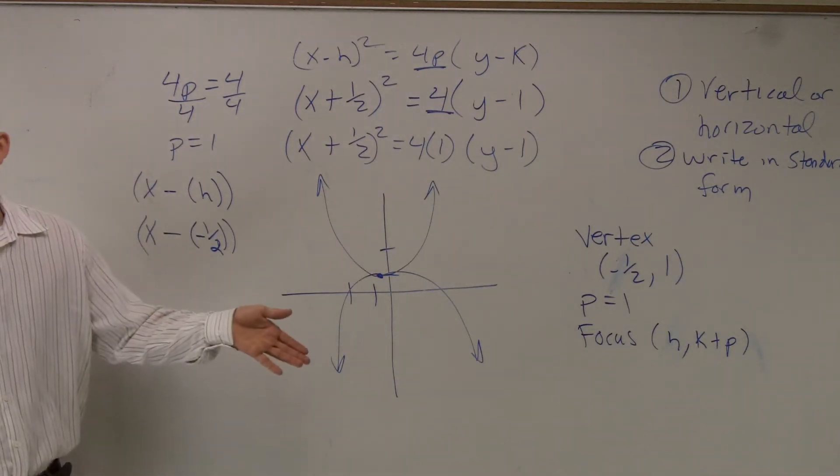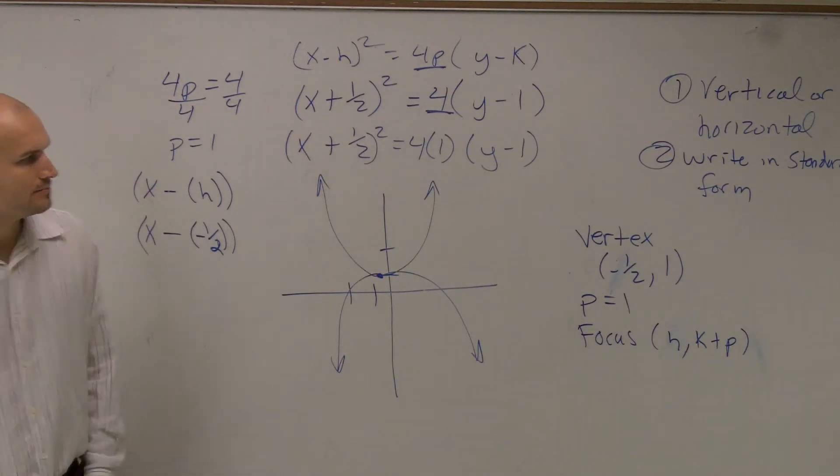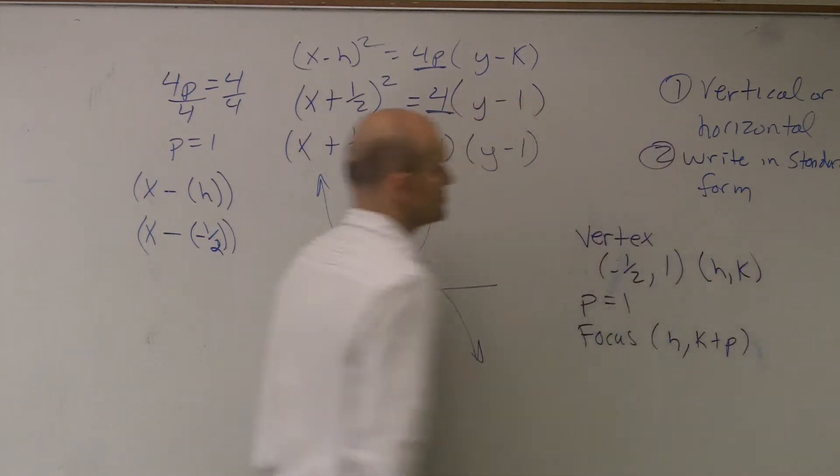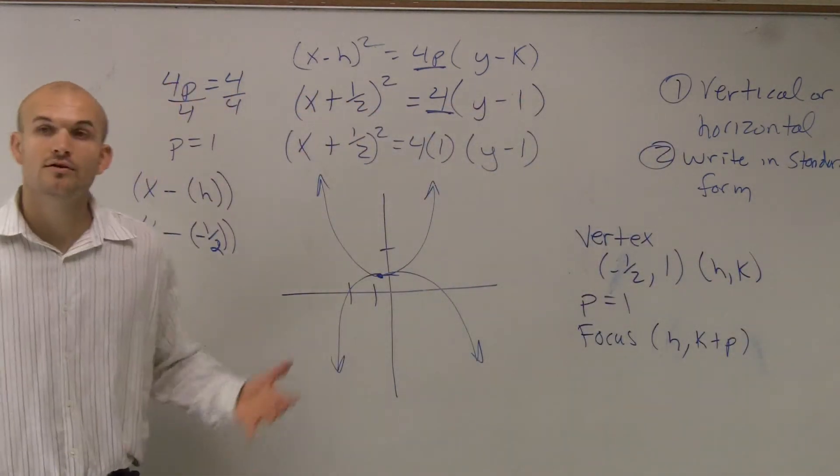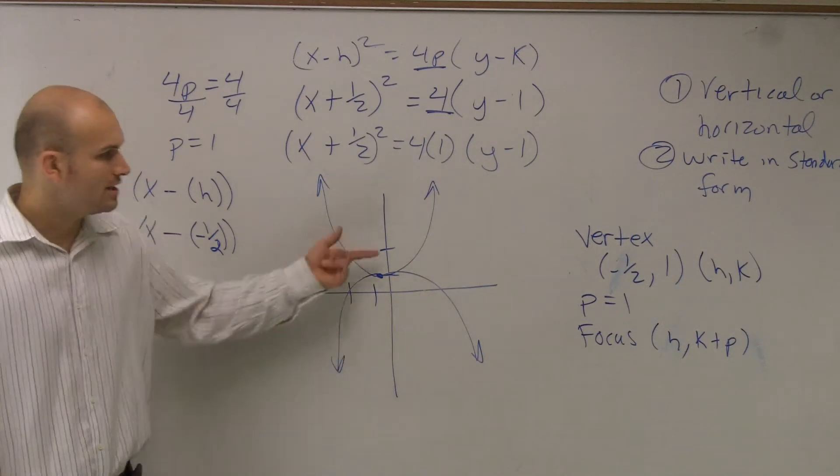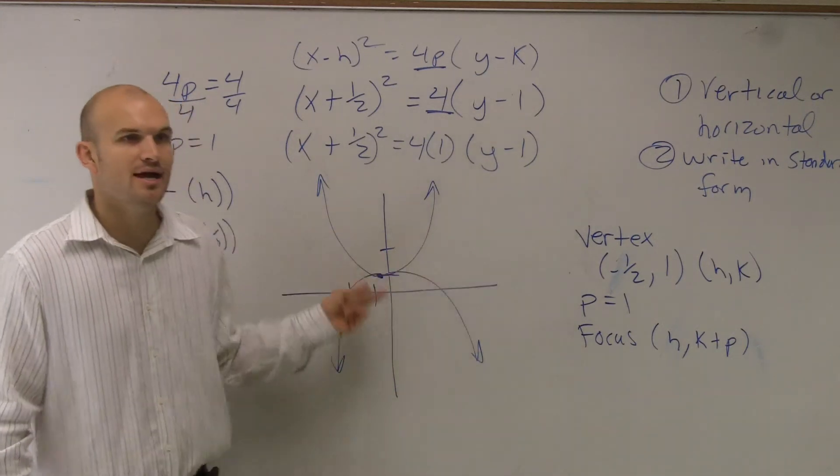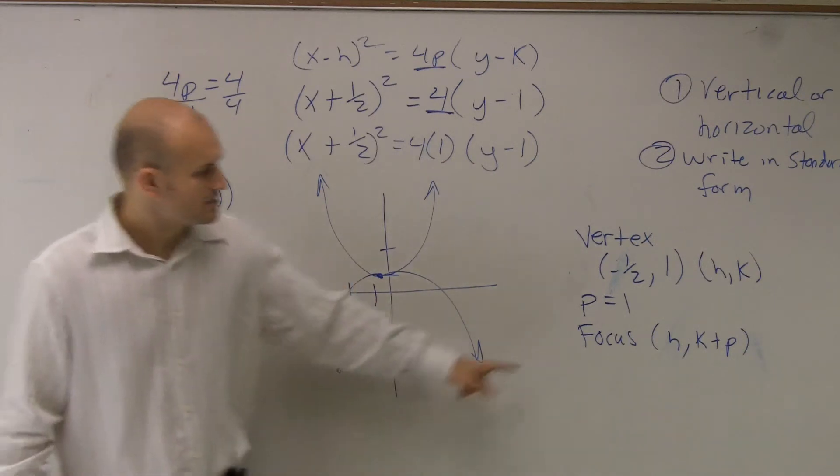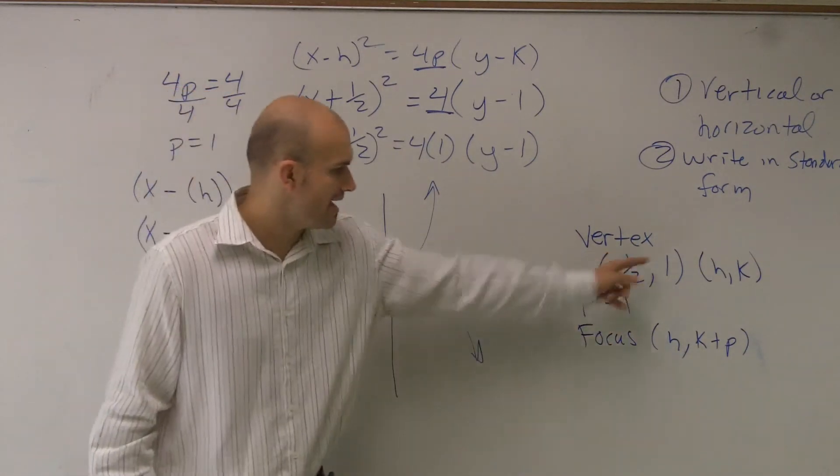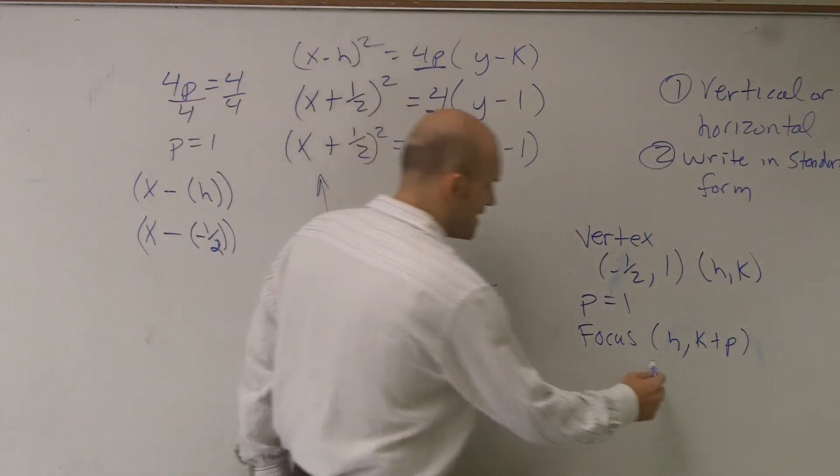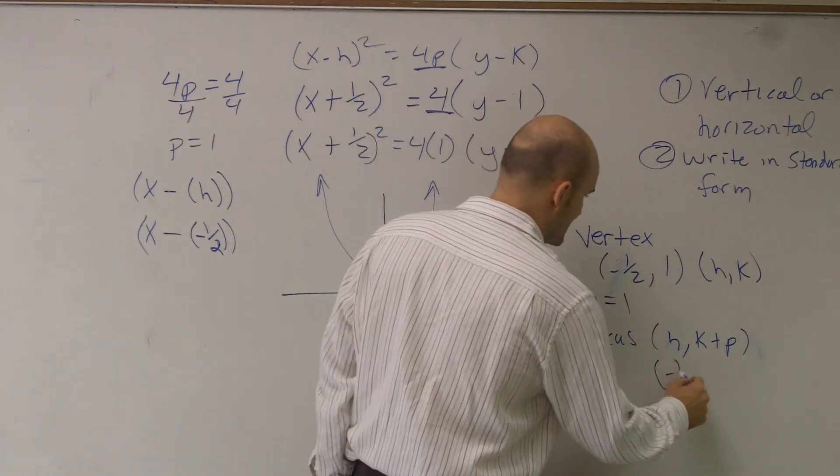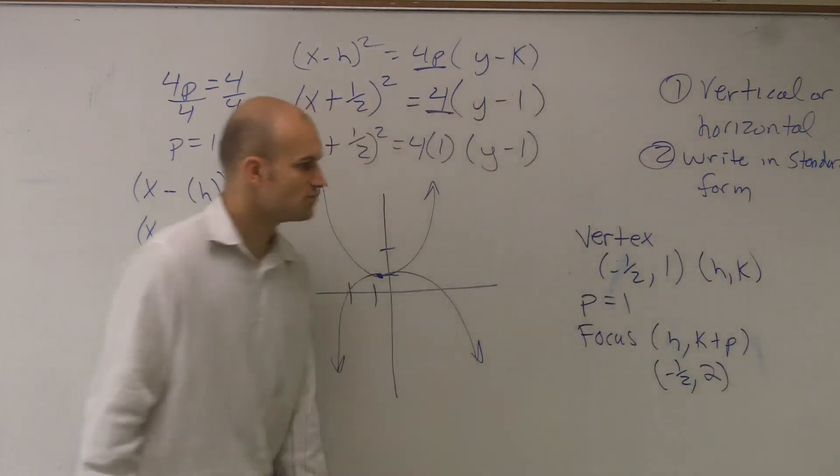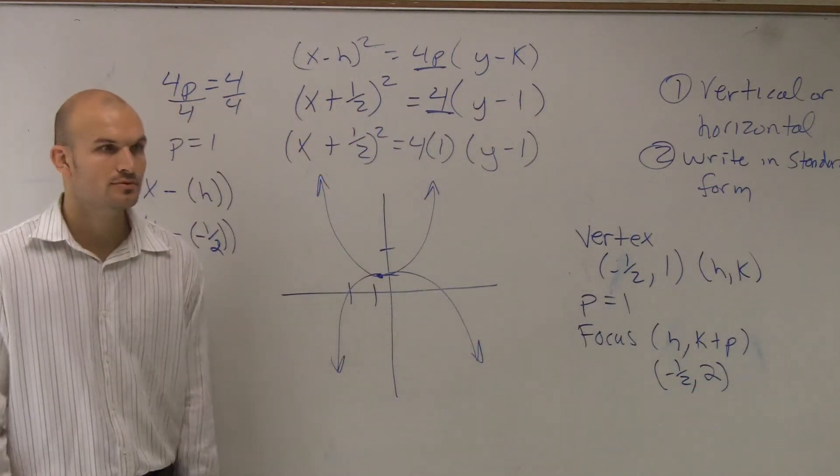Remember, h and k is your vertex, right? Which I didn't write in there. So, my vertex is h, comma, k. For my focus, all I need to do is just add my p to my y-coordinate of my vertex. So, I have h, comma, k plus p. Well, if I add 1 to that, my focus I'm going to get is a negative 1/2, comma, 2. Because 1 plus 1 could be 2, right?